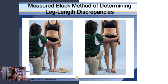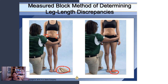You can also assess leg length discrepancy using measured blocks of known height. Have the patient stand and assess iliac crest and ASIS height, then place blocks under the shorter side to level it out — this gives you an actual measurement of the discrepancy. I don't always treat leg length discrepancies because many patients have had them their whole life, have compensated, and it's probably not an issue — it really just depends.